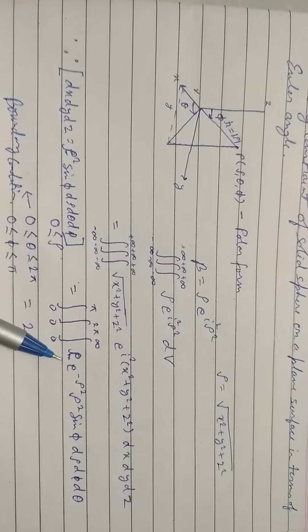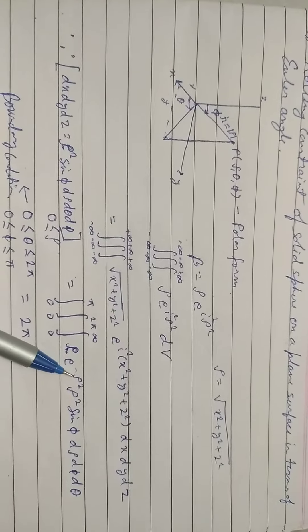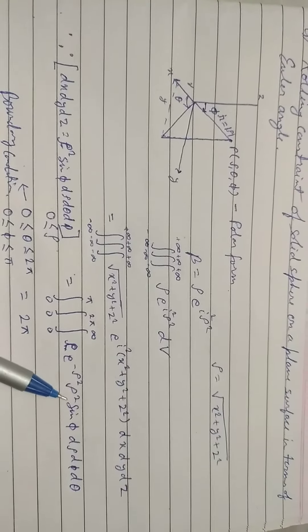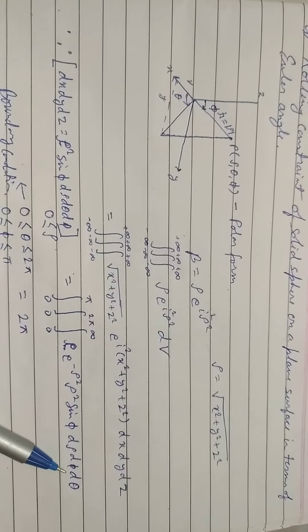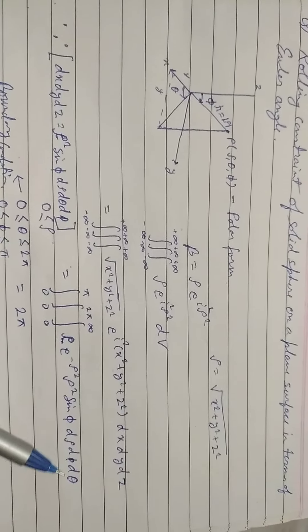0 to infinity in rho e to the power minus rho square, rho square sine phi d rho d theta, d phi d theta.